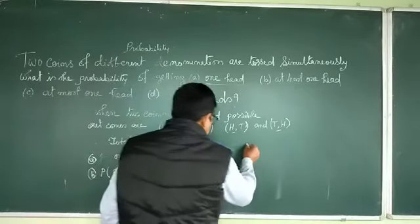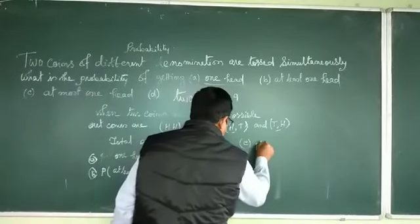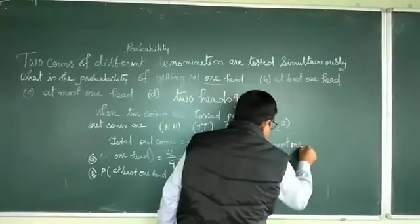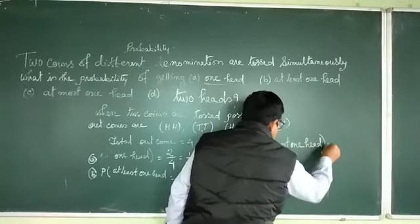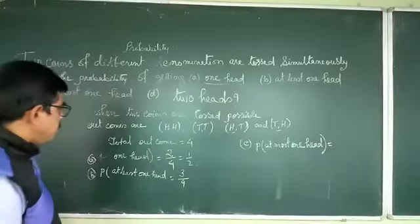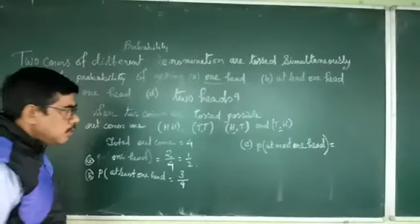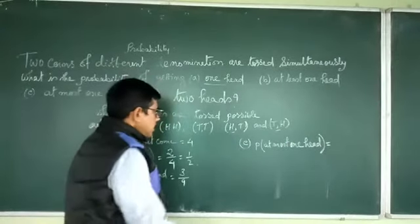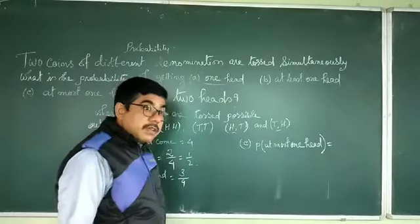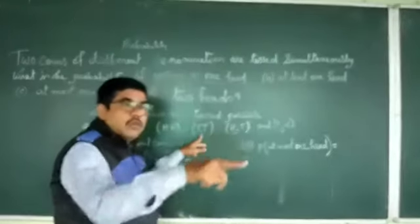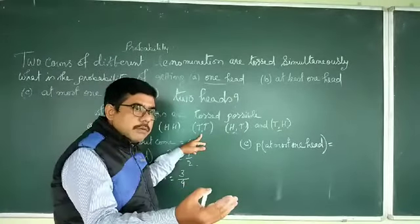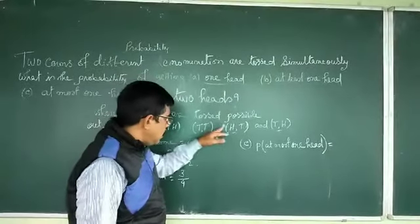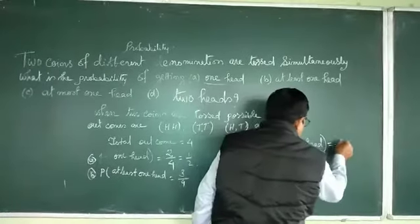Next, at most one hit. At most means maximum one hit. So maximum one hit includes no hit and one hit. We count: one, two, three — that is also three out of four. So the probability of at most one hit is three by four.